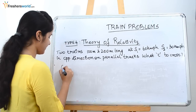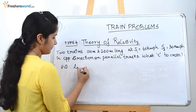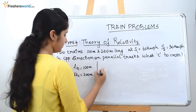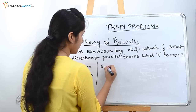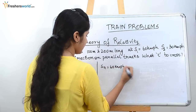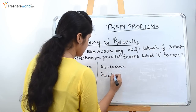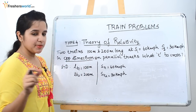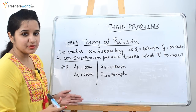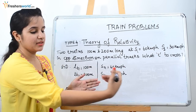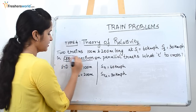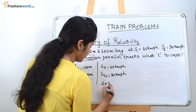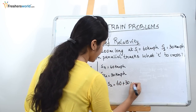Write the given data. Length of Train 1 is 100 meters, length of Train 2 is 200 meters. Speed of Train 1 is 60 km/h and speed of Train 2 is 30 km/h. As seen in the question, they move in the opposite direction. Note: parallel tracks means they are on parallel tracks but coming in the opposite direction. Since it is opposite direction, we add the speeds: S1 plus S2 = 60 plus 30 = 90 km/h.